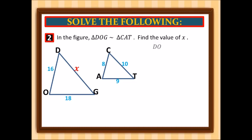We have DO over DG. DO corresponds to side CA, and DG corresponds to side CT. So DO is equal to 16 over x, and CA is equal to 8 over 10.